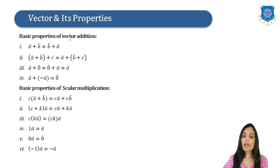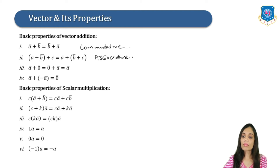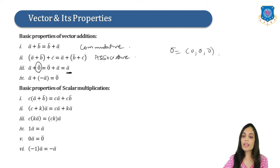There are a few properties of vector addition. First, A bar + B bar = B bar + A bar — this is the commutative property. Second, (A bar + B bar) + C bar = A bar + (B bar + C bar) — this is the associative law. Third, A bar + 0 bar = 0 bar + A bar = A bar, so 0 bar is the additive identity. Fourth, A bar + (−A bar) = 0 bar — this is the additive inverse.